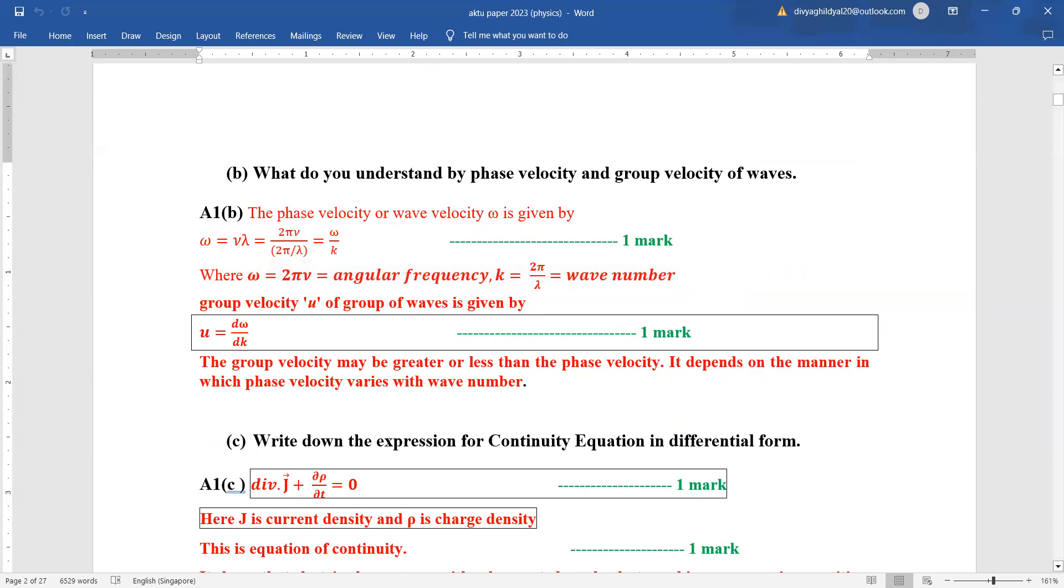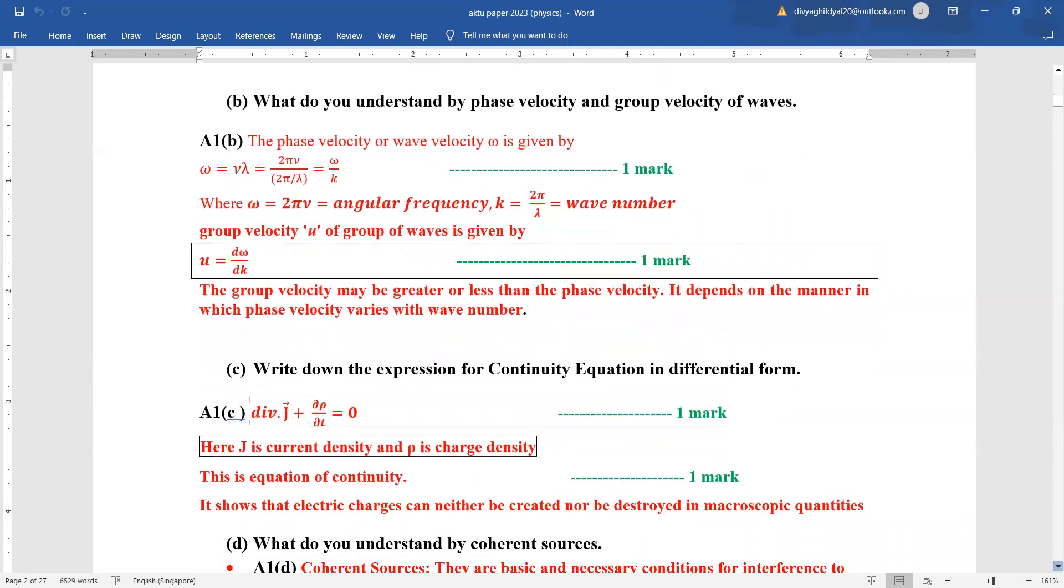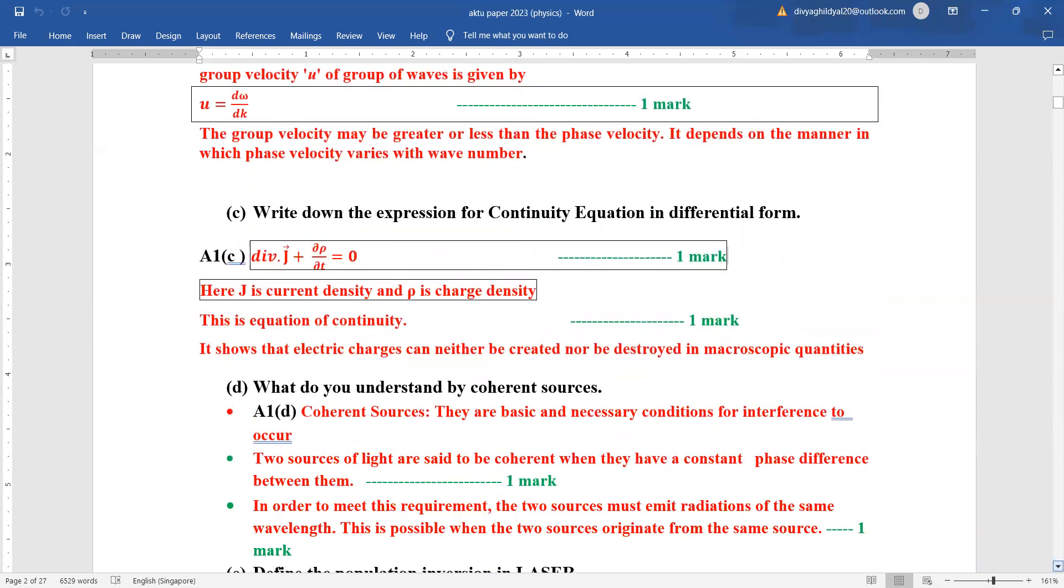Continuity equation in differential form: divergence j plus del rho by del t equal to zero. Here j is current density, rho is charge density. You will get one mark for writing the expression. Another mark for explaining that j is current density, rho is charge density, and it shows that electric charges can neither be created nor destroyed in macroscopic quantities.